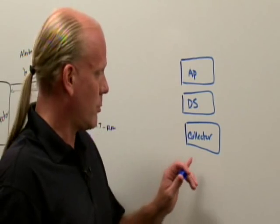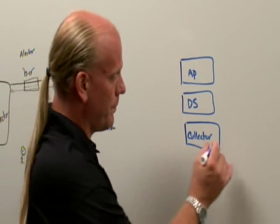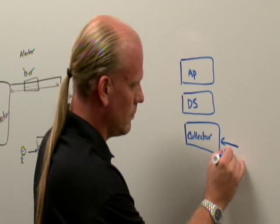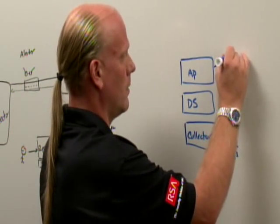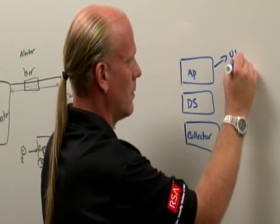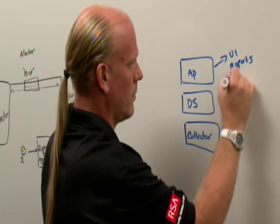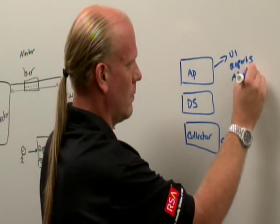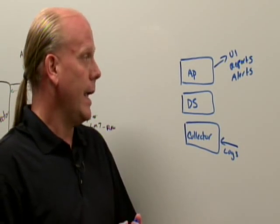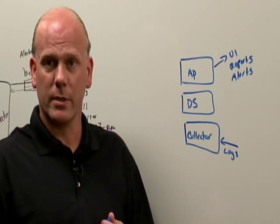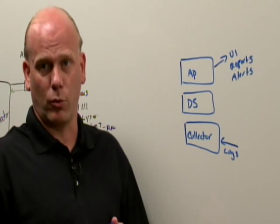So that's my application server. To recap what these pieces do: the logs come into the collector. The application server provides a UI interface. It's also the place that I write the reports and a place that I access and configure the rules.